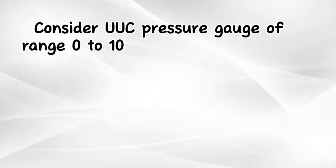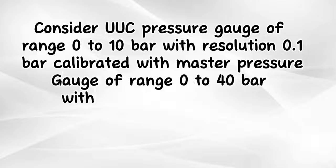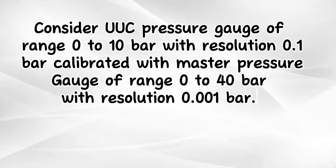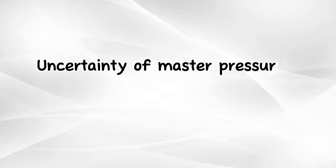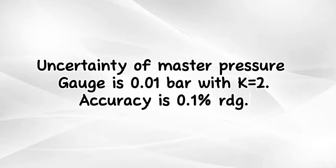Consider UUC pressure gauge of range 0 to 10 bar with resolution 0.1 bar calibrated with master pressure gauge of range 0 to 40 bar with resolution 0.001 bar. Uncertainty of master pressure gauge is 0.01 bar with K equals 2. Accuracy is 0.1% RDG.